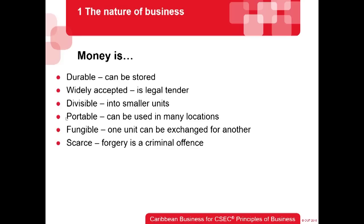Money must be divisible. Remember in batter, some goods just couldn't be divided — you can't cut off the ear of a pig and expect it to survive. Money solved that problem by being divisible into smaller units. You can break down a $5 bill into singles, into quarters, into cents — right down to 1 cent. That's why when you go to the shop and give a $20 for something that costs $15, you get back change. Money can be divided into smaller units.